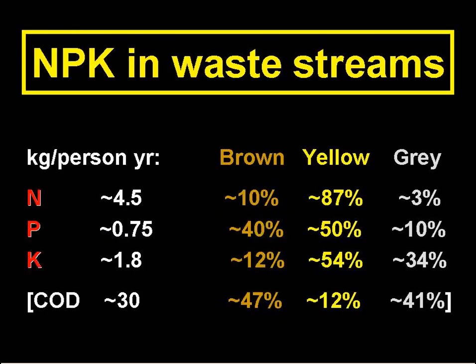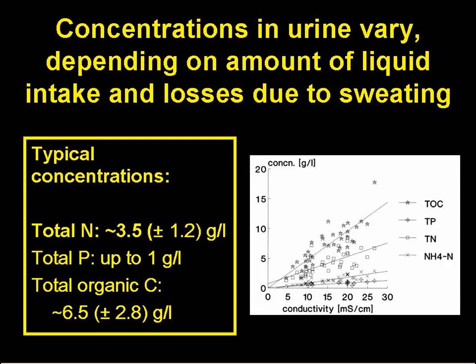This slide shows where nutrients — the NPK — are in our waste streams. Urine, or yellow water, has most of the nitrogen and just over half the potassium. And black water, yellow and brown waters together, has 90% of the phosphorus. The concentrations in yellow water vary quite a bit, as they depend on how much a person drinks and sweats. But typically, urine contains about 3.5 grams total nitrogen per litre and up to 1 gram phosphorus per litre. The chart on the right shows that we can get good estimates of the concentrations of total N, ammonia N, total P, and total organic carbon simply by measuring the electrical conductivity of the urine.